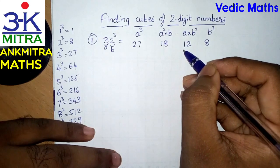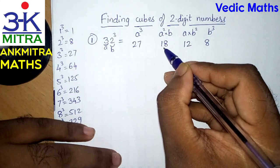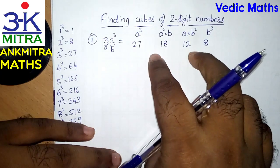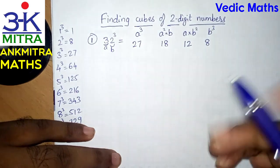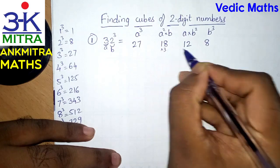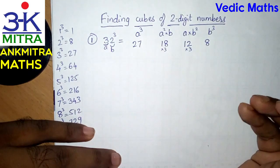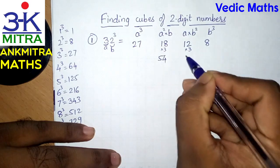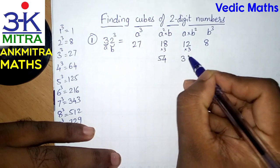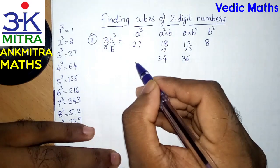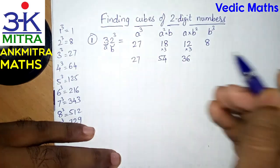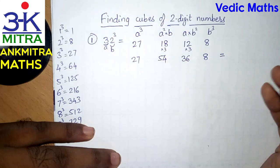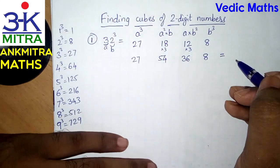The next step is to multiply the middle two numbers by 3. Out of these four numbers, only the middle two numbers are to be tripled. So 18 multiplied by 3 is 54, and 12 multiplied by 3 is 36. These two end numbers remain as they are — 27 remains as it is and 8 remains as it is.